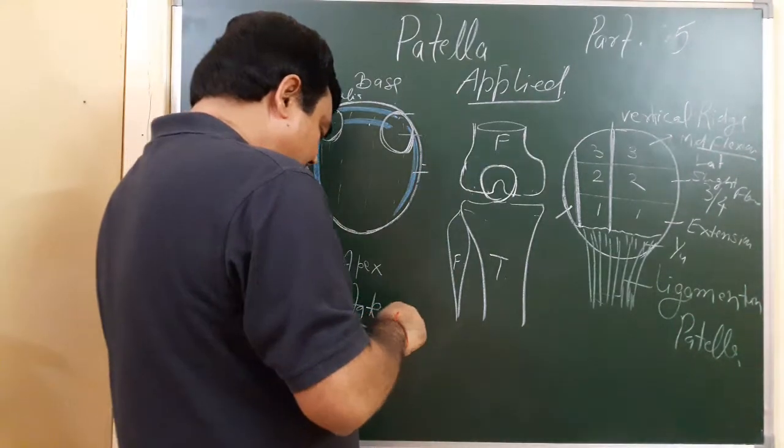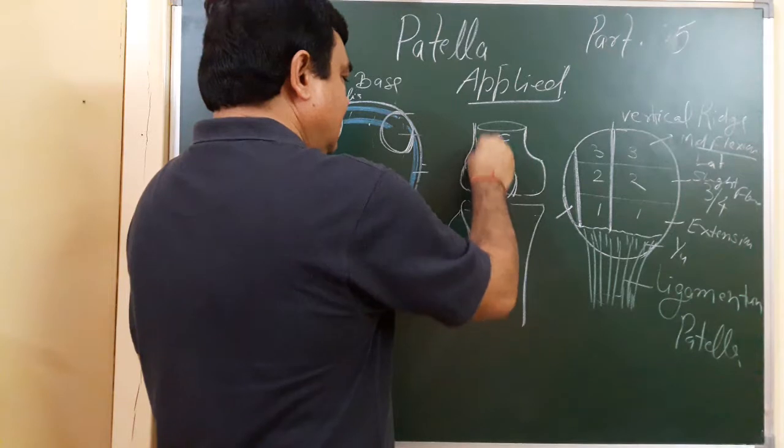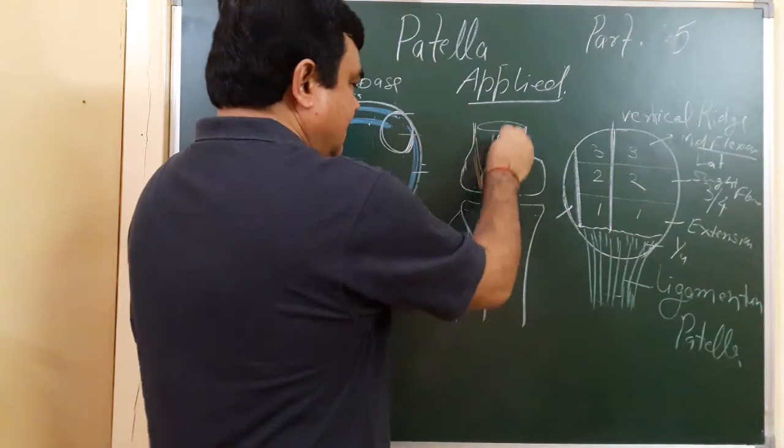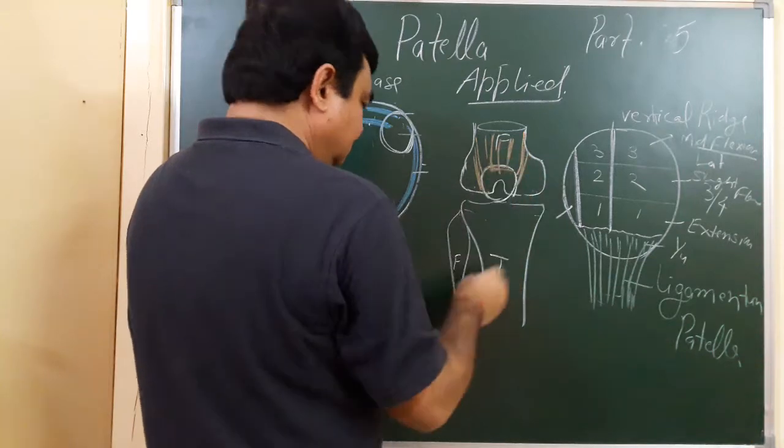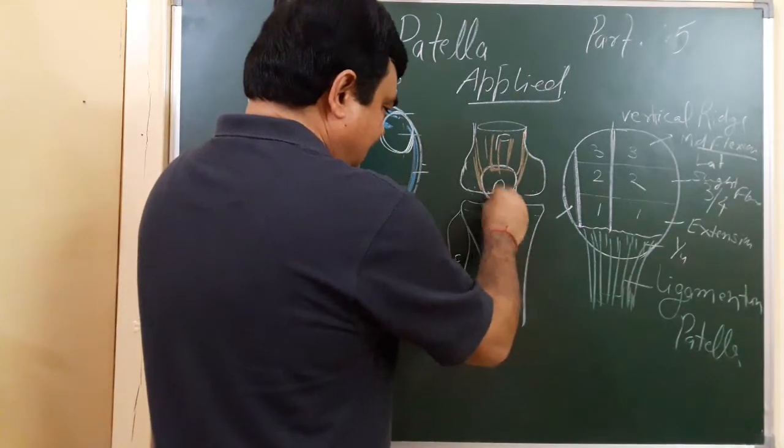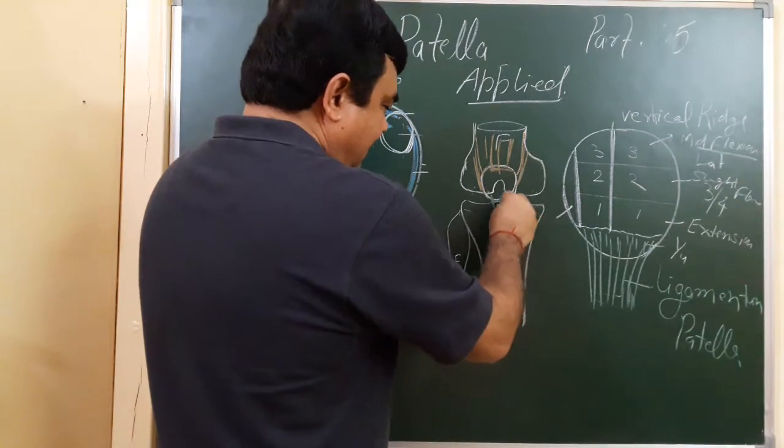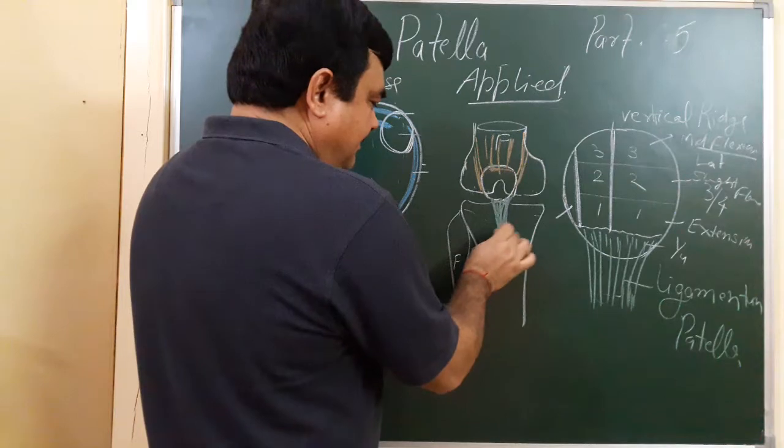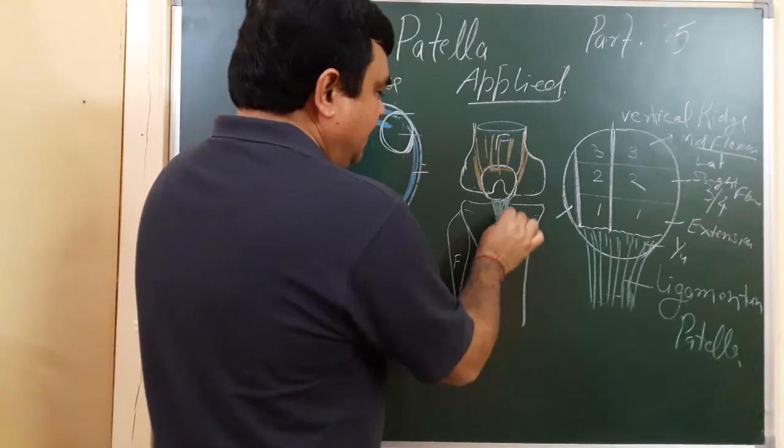Here muscles are attached, like this, and here is the ligamentum patella. This is the tibial tuberosity, where it is attached.